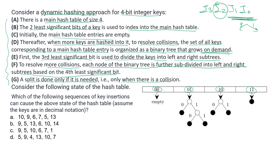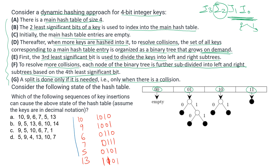Let us write down the binary representations. For 10: 1010. For 9: 1001. For 6: 0110. For 7: 0111. For 5: 0101. For 13: 1101. We insert them in this order starting from 10.